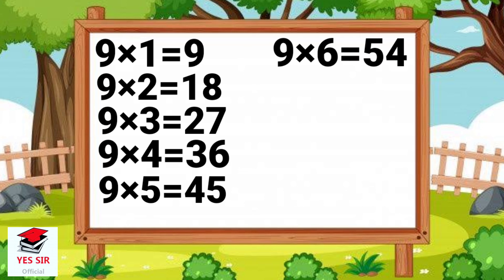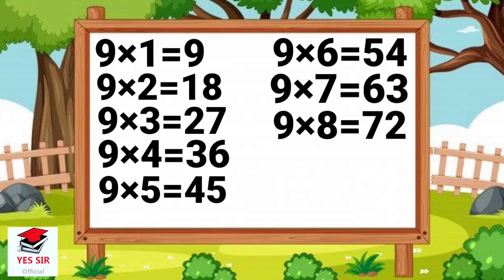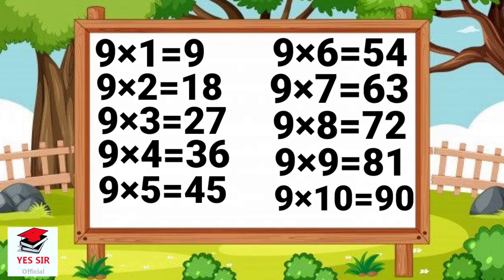9 and 6 are 54. 9 and 7 is equal to 63. 9 and 8 are 72. 9 and 9 are 81. 9 and 10 are 90.